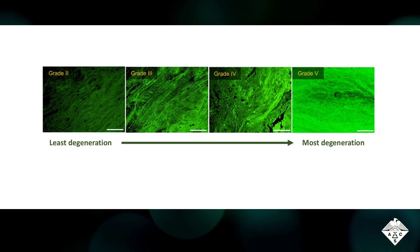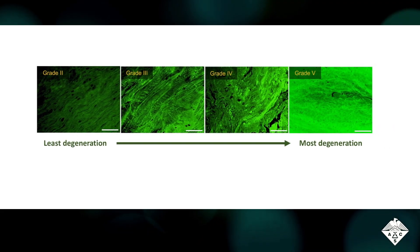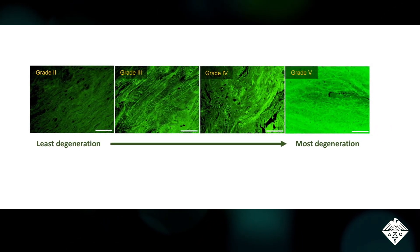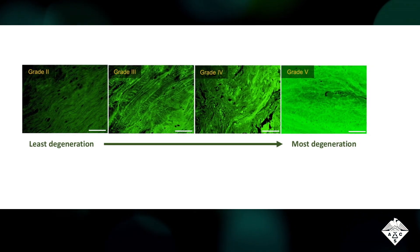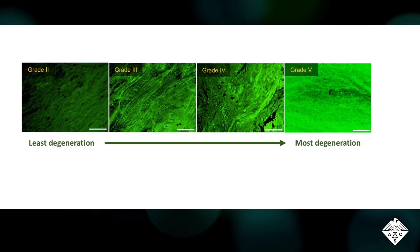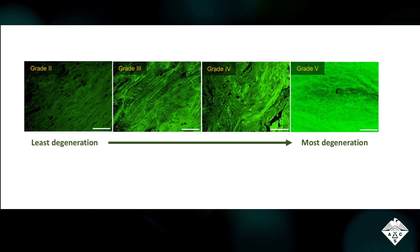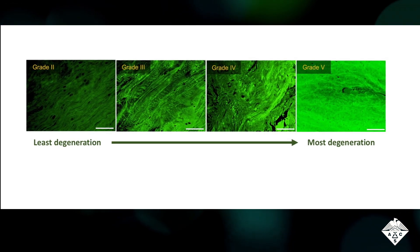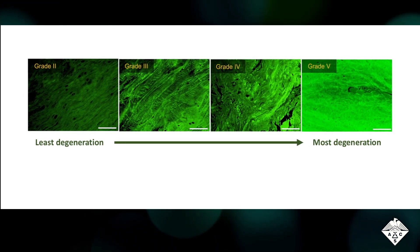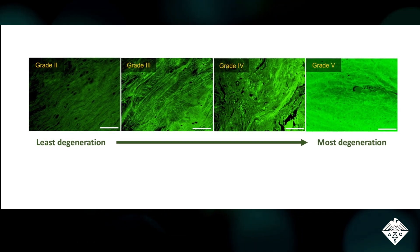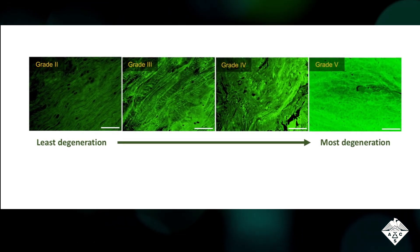Finally, the team attached a different dye to the CHP probe, applying it to microscope slides of intervertebral discs from people who had undergone spinal surgeries. Under the fluorescence microscope, the researchers observed that the fluorescence intensity of the stain rose substantially as the level of disc degeneration from denatured collagen proteins increased.